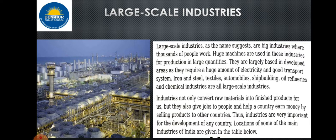Examples of large scale industries include iron industry, oil refinery, textile, automobiles, and chemical industries. Industries not only convert raw material into finished products, but they also give jobs to many people and help countries earn money by selling products to other countries. Industries are very important for the development of a country.